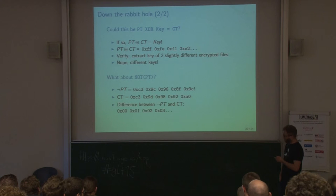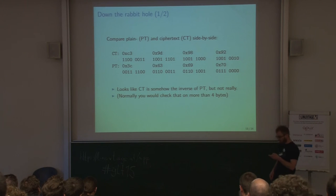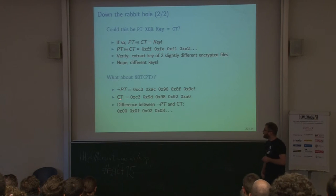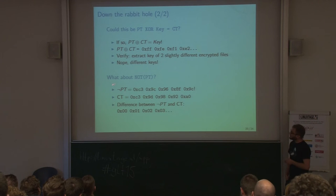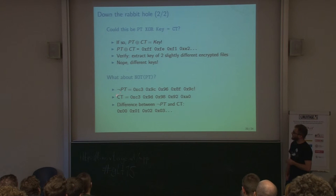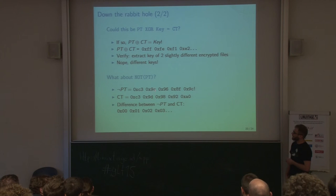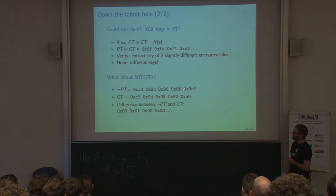What about NOT — which we saw seemed at least partly true for the first few bytes? Let's try NOT(PT) — negate each plaintext byte — and see if that matches the ciphertext. The first byte checks out; the second is mostly okay; then it starts to get different. But if we look at the difference — subtract NOT(PT) from the ciphertext byte by byte — the result does not look random at all. This can't be an accident.